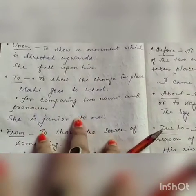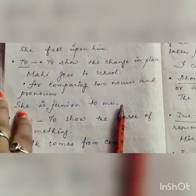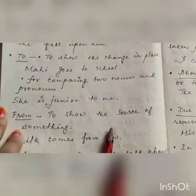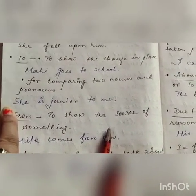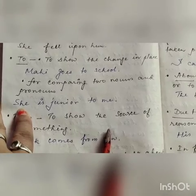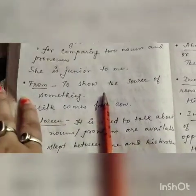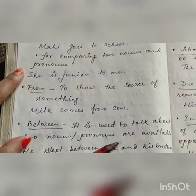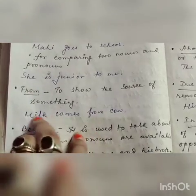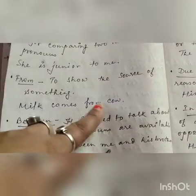Another use of 'to' is for comparing two nouns or pronouns. Whenever you are comparing two nouns or pronouns, you can also use 'to'. For example: 'She is junior to me' — we are comparing 'she' and 'me', two pronouns. Next, 'from' — whenever you are showing the source of something, you use 'from'. For example: 'Milk comes from cow' — there is a source of the milk.